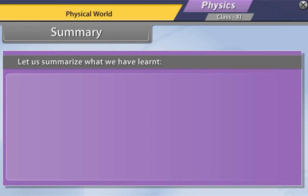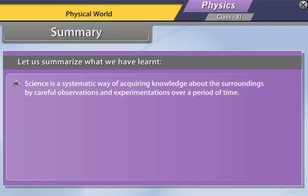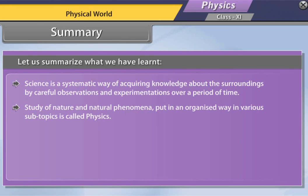Let us summarize what we have learned. Science is a systematic way of acquiring knowledge about the surroundings by careful observations and experimentations over a period of time. Study of nature and natural phenomena, put in an organized way in various subtopics is called physics.